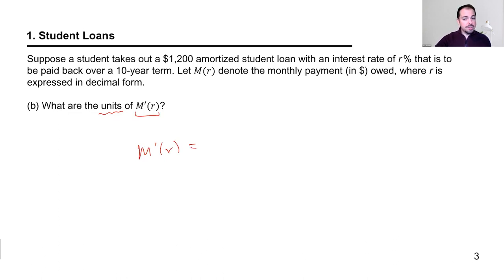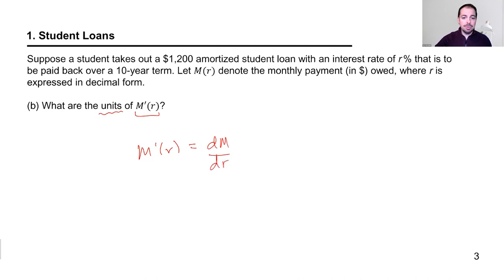I'll use Leibniz notation and its relation to Newtonian notation. Remember that in Leibniz notation, the derivative f prime of x — or in this case, M prime of R — is written as dM/dR. That's really useful because it helps me remember what the units of the derivative are.